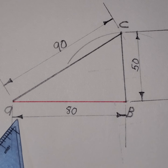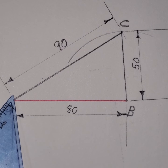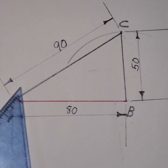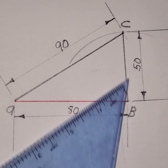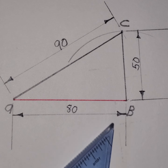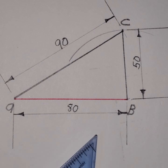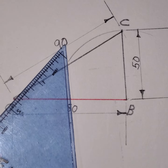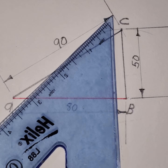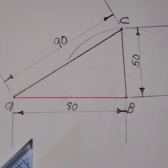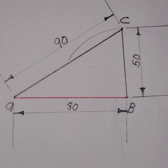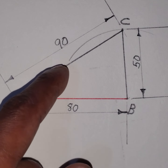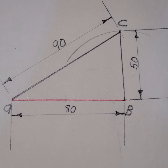And that is how we dimension a figure. To summarize: extension line, dimension line, arrow, text. There should be a gap of approximately three to four millimeters between the extension line and your object. Your extension lines should not touch the figure. Your extension lines should be very pale — not too dark. The dimension line, which tells the distance, normally has two arrows at both ends. Also remember the dimension line should not be closer than 10 millimeters to the object. Thank you for watching guys, peace out.